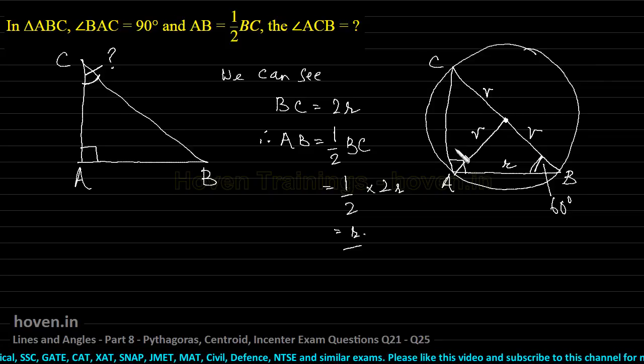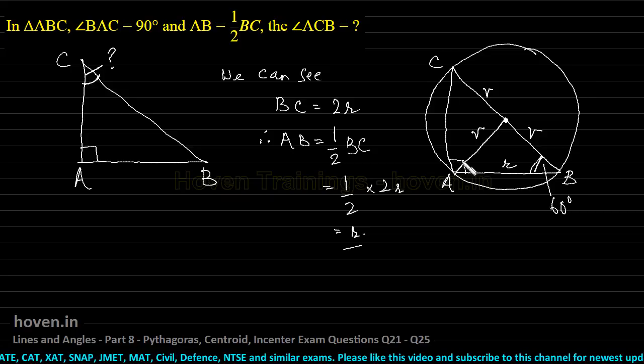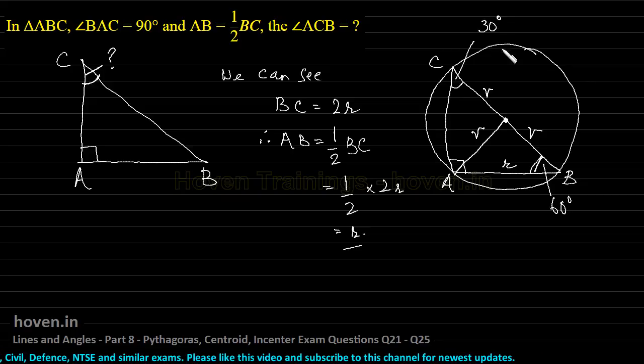then if this is 90, this is 60, then this angle must obviously be 30 degrees. So that 30 plus 60 is 90 and 90 plus 90 is 180. Therefore, the answer is 30 degrees.